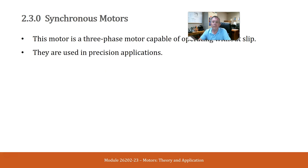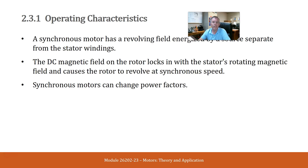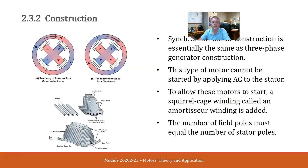This motor is a three-phase motor capable of operating without slip. They are used in precision applications — that's synchronous motors. The synchronous motor has a revolving field energized by a source separate from the stator winding. The DC magnetic field on the rotor locks in with the stator's rotating magnetic field and causes the rotor to revolve at synchronous speed. Synchronous motors can change power factors. Synchronous motor construction is essentially the same as three-phase generator construction. This type of motor cannot be started by applying AC to the stator. To allow these motors to start, a squirrel cage winding called an amortisseur winding is added.